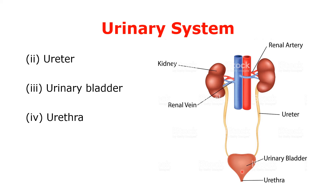The bladder has three openings: two for the ureters and one for the urethra. The triangular area between these three openings is called the trigone of the bladder. You can see the structure of the urinary bladder is just like a triangular shape — this is called the trigone of the bladder.